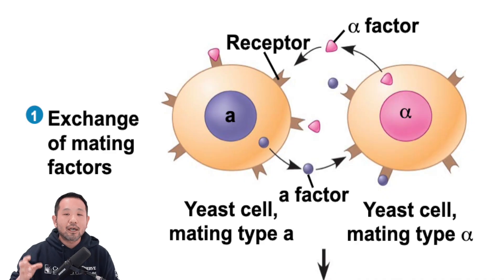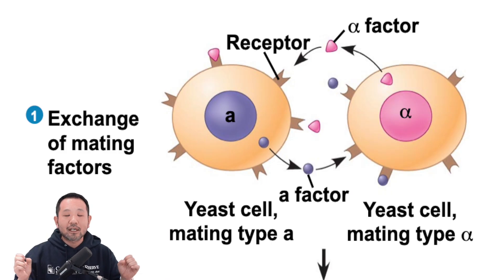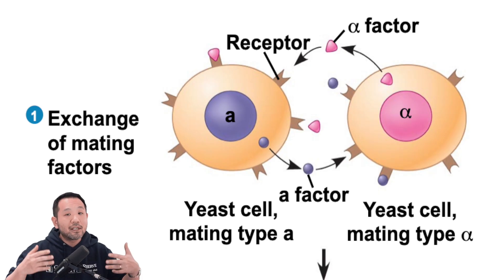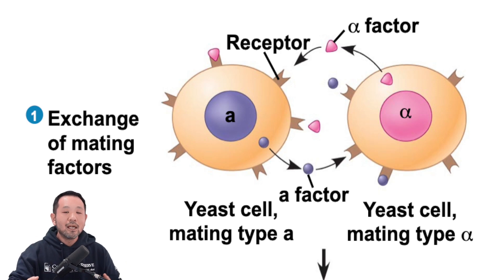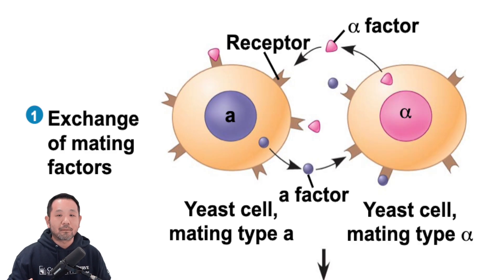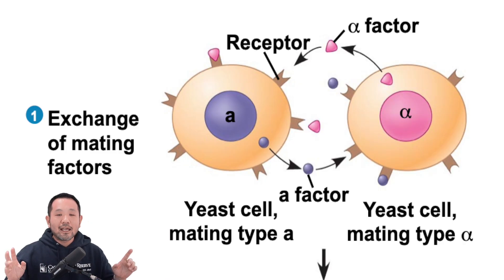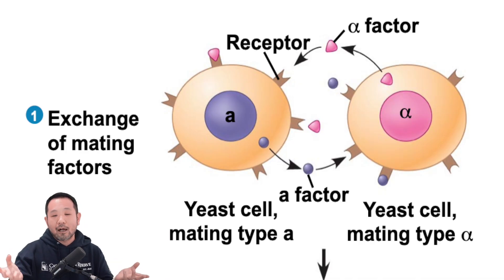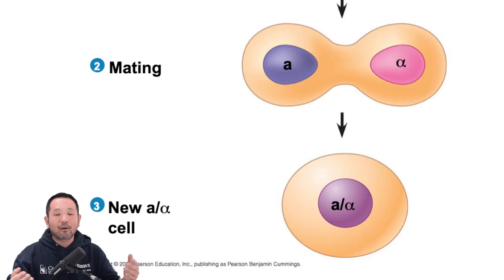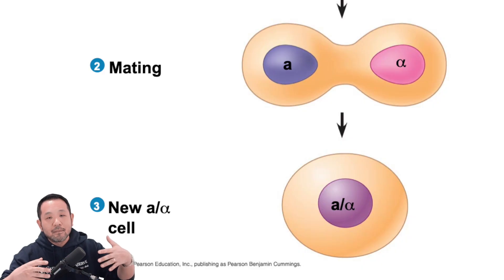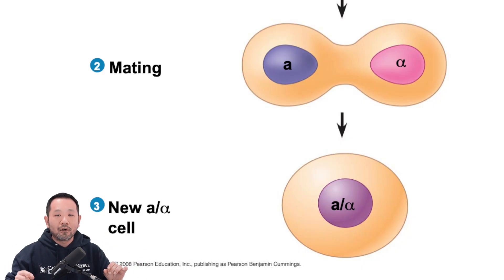The A cell produces a chemical called the A factor, while the Alpha cell produces a chemical called the Alpha factor — these can be considered the voices of these cells. As they are released and diffuse into their surroundings, they can reach the cell of the other mating type. The A cells have an Alpha factor receptor that can only detect Alpha factors, while Alpha cells have an A factor receptor that can only detect A factors. This way, they can only hear each other through chemical signaling, orienting themselves toward higher concentrations and eventually migrating to mate.